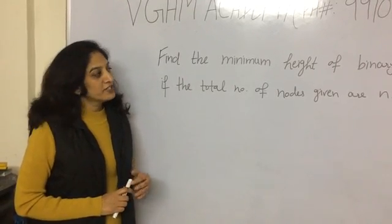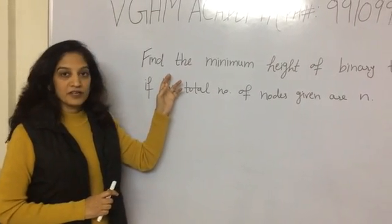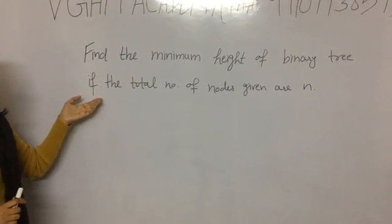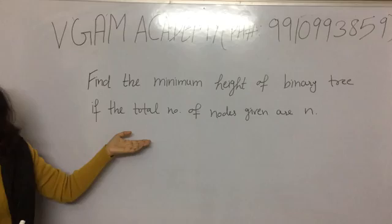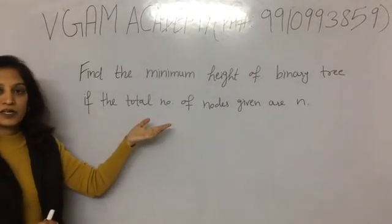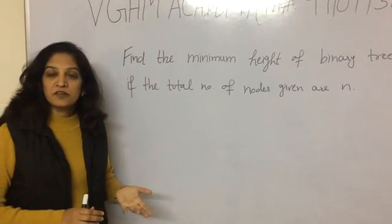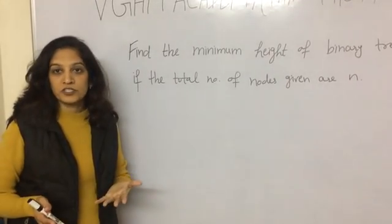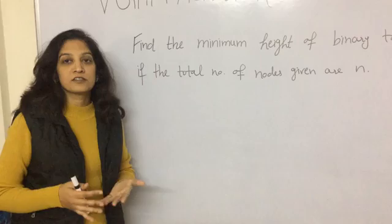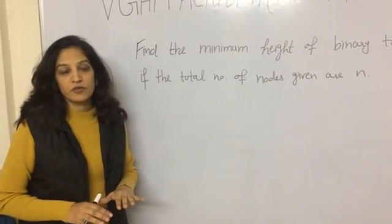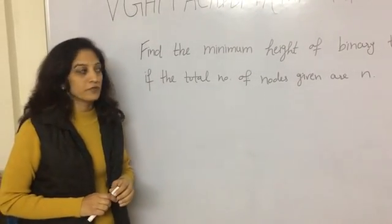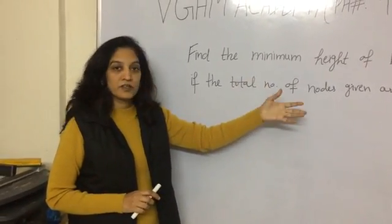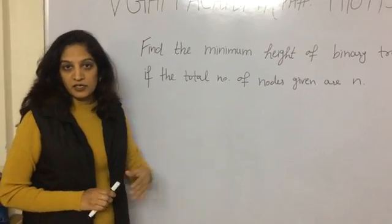Today we will discuss a question regarding the binary tree: find the minimum height of a binary tree if the total number of nodes given are N. First of all, what is a binary tree? A binary tree is a tree in which every node has maximum 2 children — either 0, 1, or 2 children. If a node has 0 children, it is called a leaf node; otherwise it is called a non-leaf node. We have to find the minimum height given total number of nodes N.